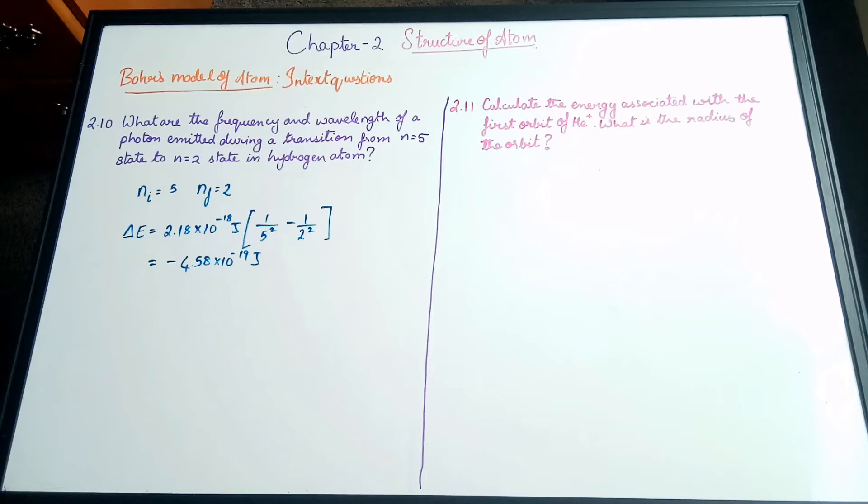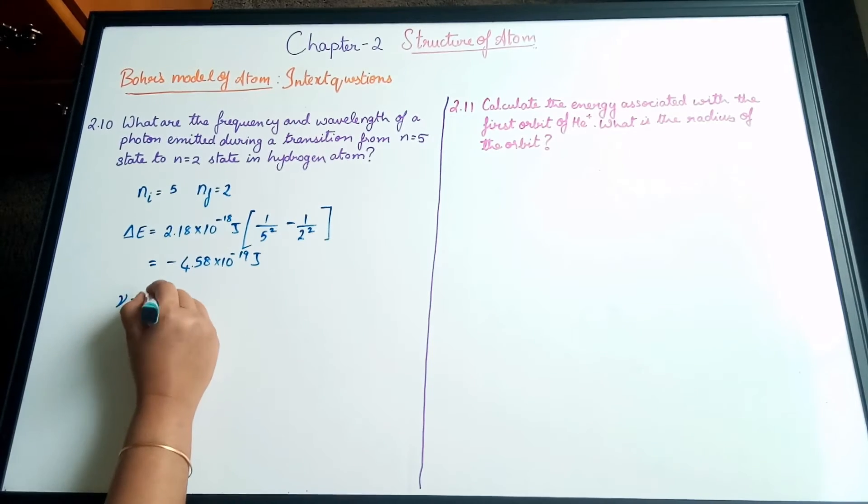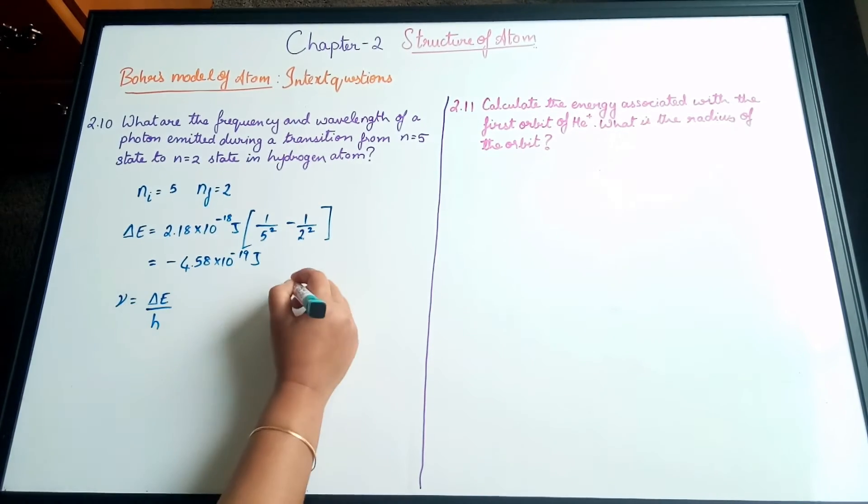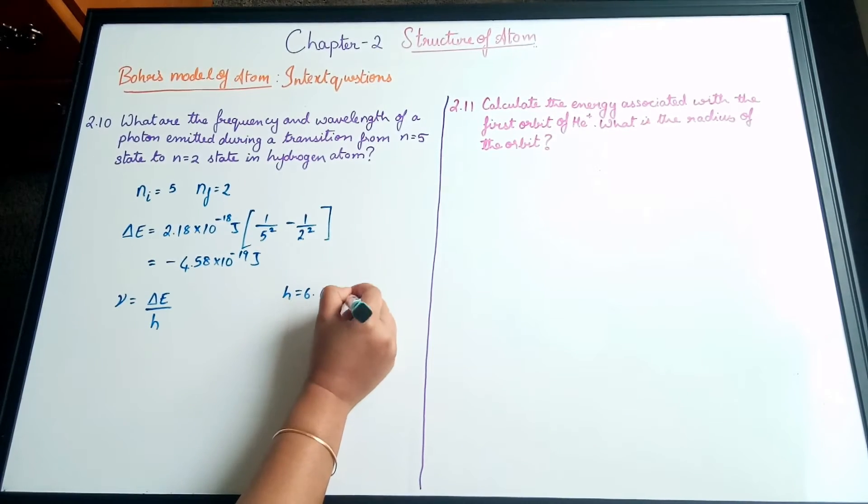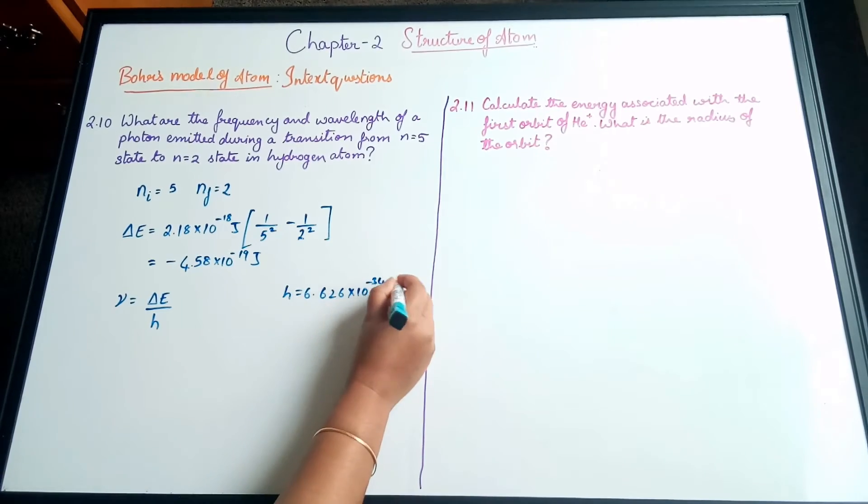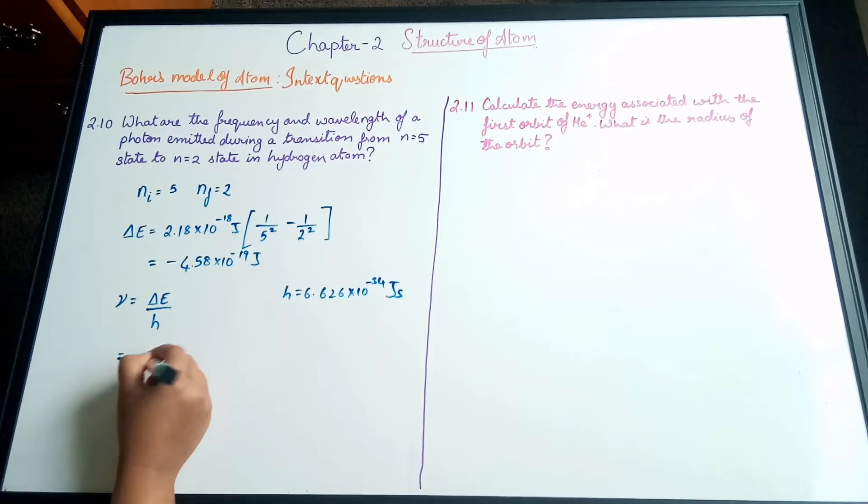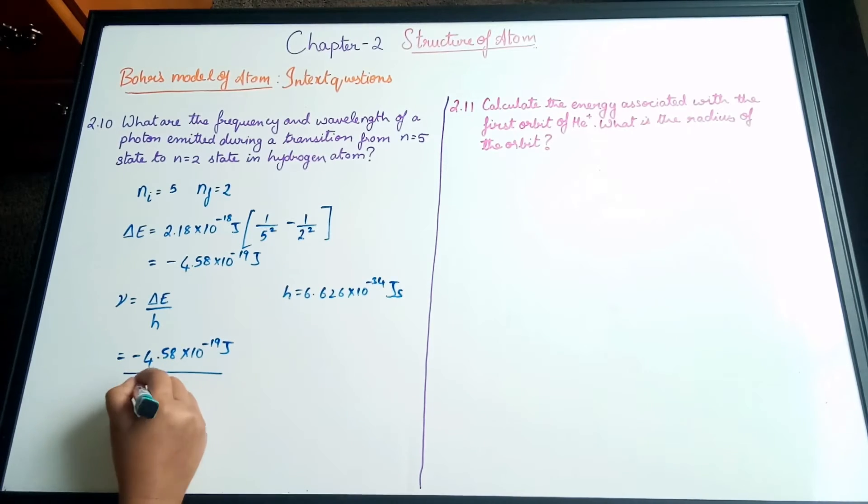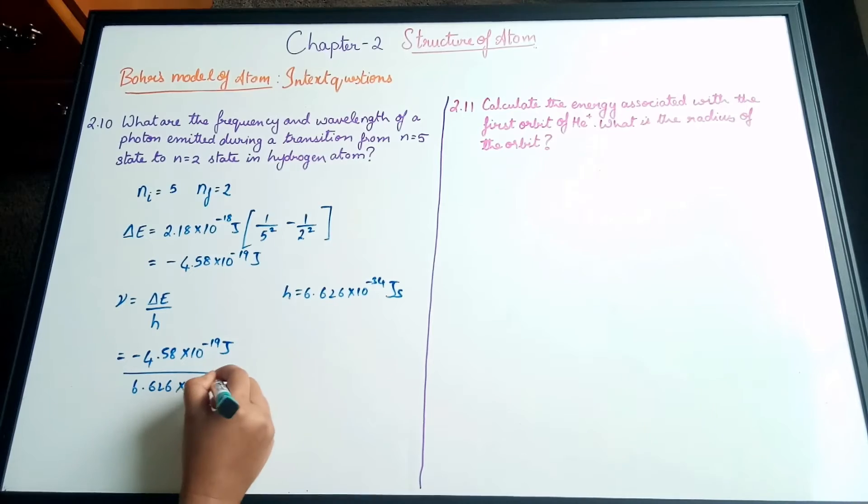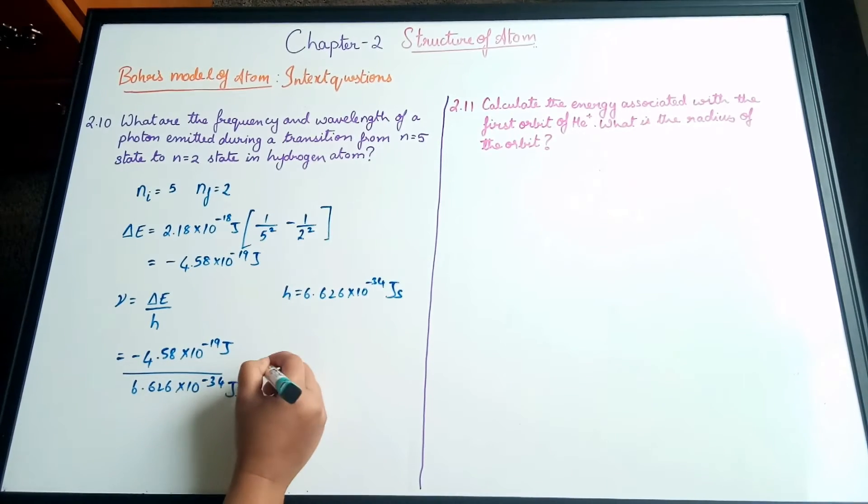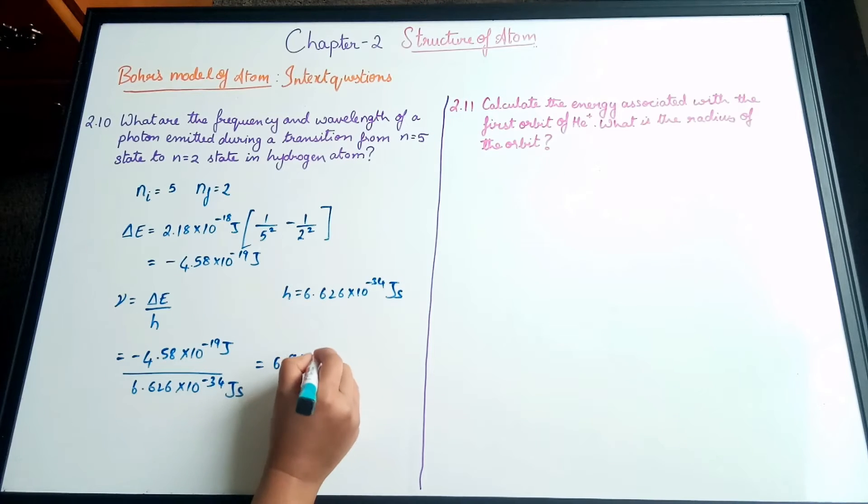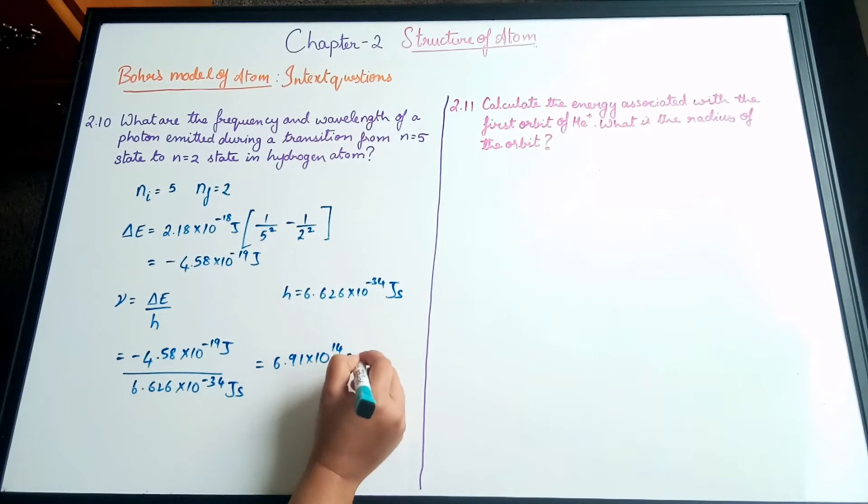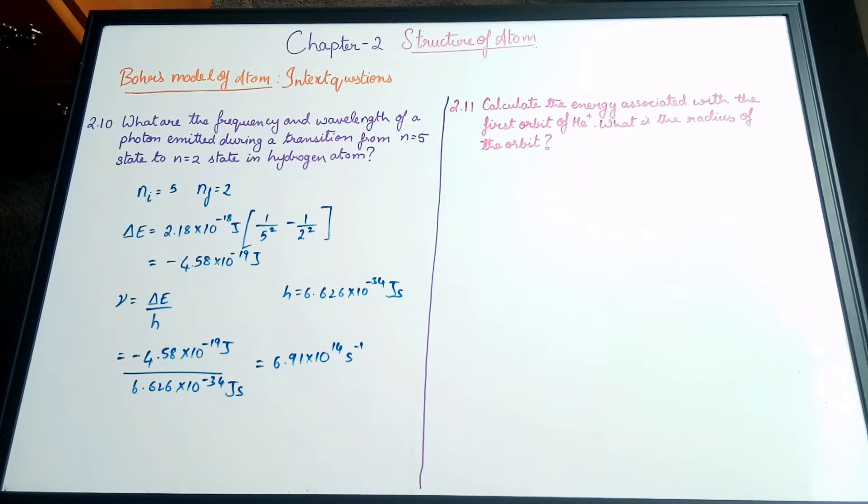Now we'll calculate the frequency: ν = ΔE/h. Planck's constant h = 6.626×10⁻³⁴ joules·second. The ΔE value is 4.58×10⁻¹⁹ joules divided by 6.626×10⁻³⁴ joules·second. When simplified we get 6.91×10¹⁴ Hz. Hertz and second inverse are the same thing, so you can write either.